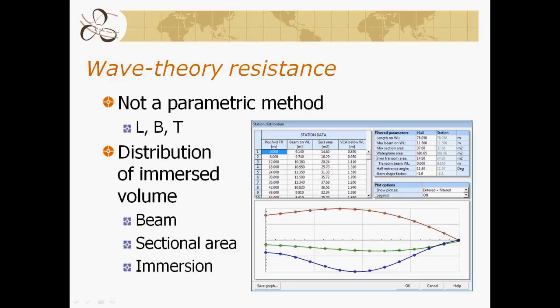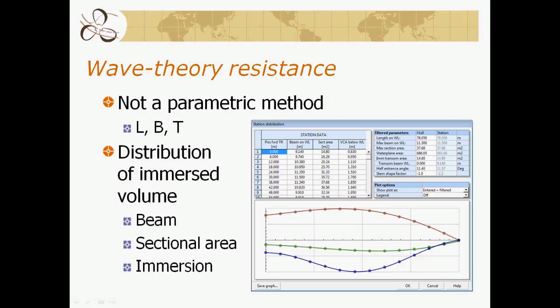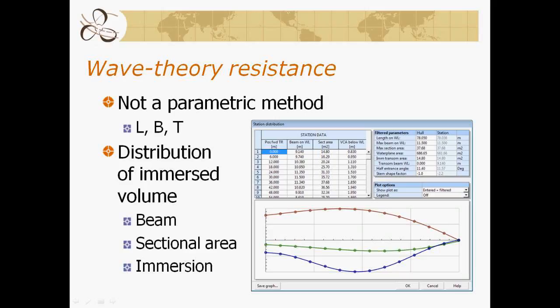The next item is our wave theory analysis. Wave theory analysis is not a parametric method. Many people are familiar with the Holtrup method, the Series 60, the Savitsky method, or any of the 40 or so different prediction methods traditionally used in NAVCAD. A parametric method uses length, beam, draft, and displacement to establish non-dimensional parameters — typically length-over-beam ratio, prismatic coefficient — which are regressed into equations.